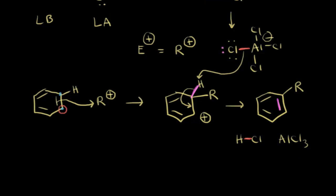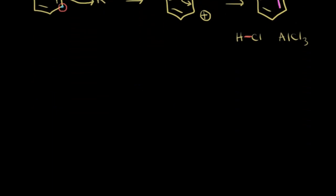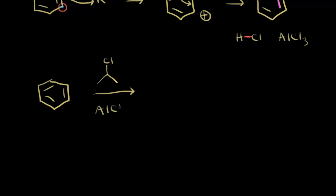Let's look at a few examples of this reaction. We start with benzene and add 2-chloropropane as our alkyl chloride, with aluminum chloride as our catalyst. When approaching a Friedel-Crafts alkylation, I think about what sort of carbocation is going to form. The chlorine leaves during the mechanism, taking away a bond from the carbon it was attached to.